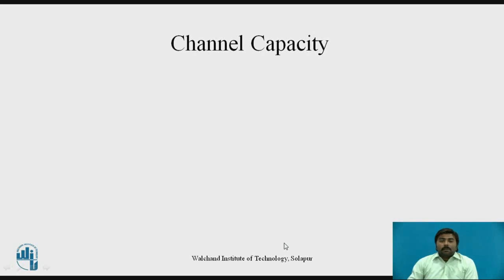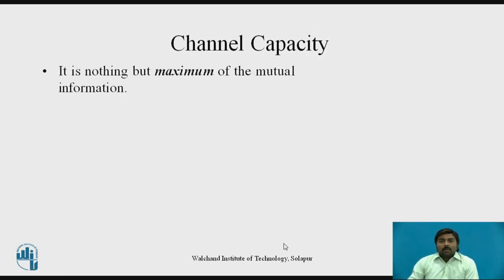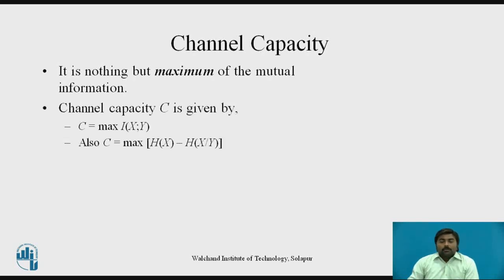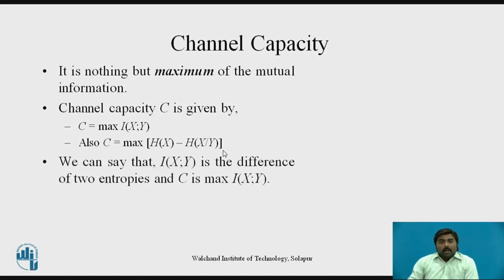Channel capacity is defined as the maximum of mutual information: C = max I(x;y). For every different channel, the value of I(x;y) is different. I(x;y) equals H(x) − H(x|y), or equivalently H(y) − H(y|x). Mutual information is the difference of entropies, and its unit is bits per second, as derived in previous sessions.